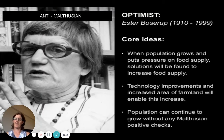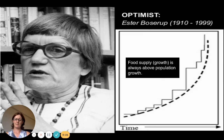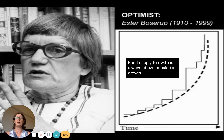Our positive anti-Malthusian thinker is Boserup. Her idea is that when we need something, when there is demand, we will create, we will innovate, we will provide technological improvements. This is her graph, and you can see that food supply or growth is always above population growth. She has a very optimistic view, unlike Thomas Malthus. You might need to explain his view or argue whether it's relevant today. Good luck.